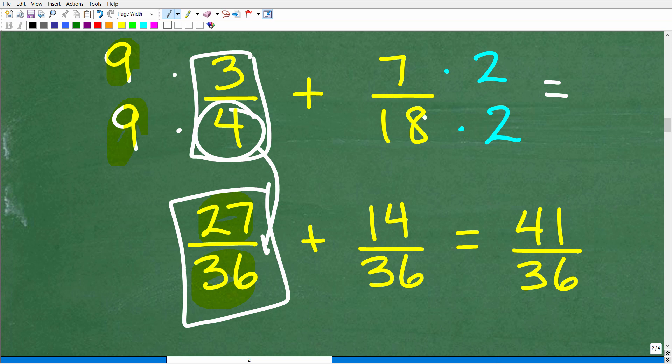All right. So how do I go from 18 to 36? Easy, just multiply by 2. So I've got to multiply both the denominator and numerator by 2. So I'm going to have the equivalent fraction of 14/36.